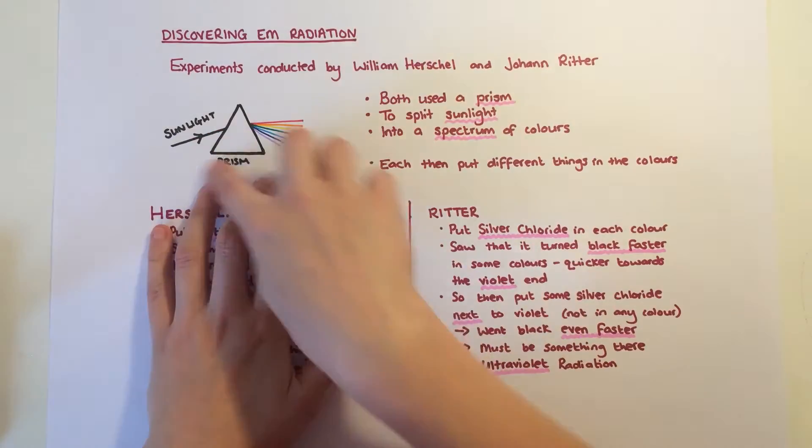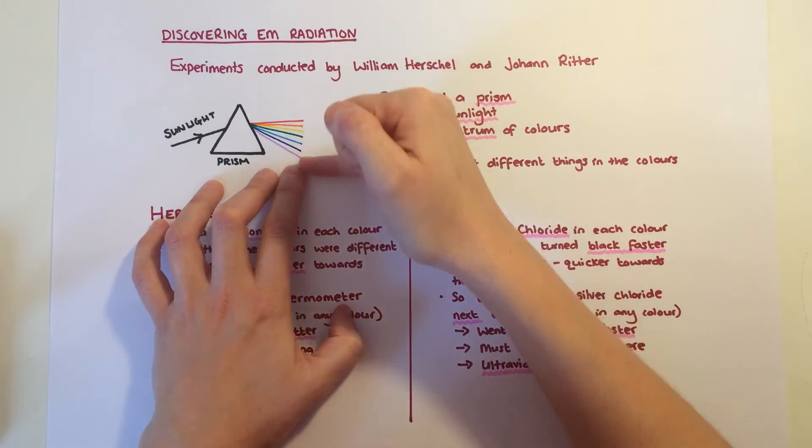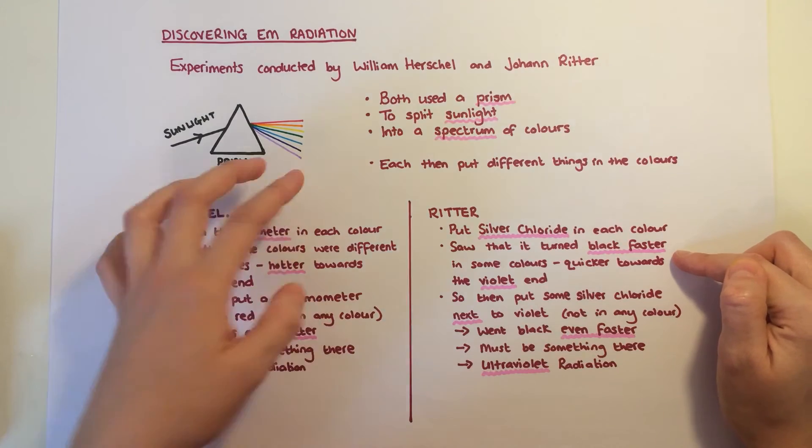Ritter, using this same basic setup, put silver chloride, a chemical, in each colour. And he saw that different colours turned the silver chloride black at different speeds.